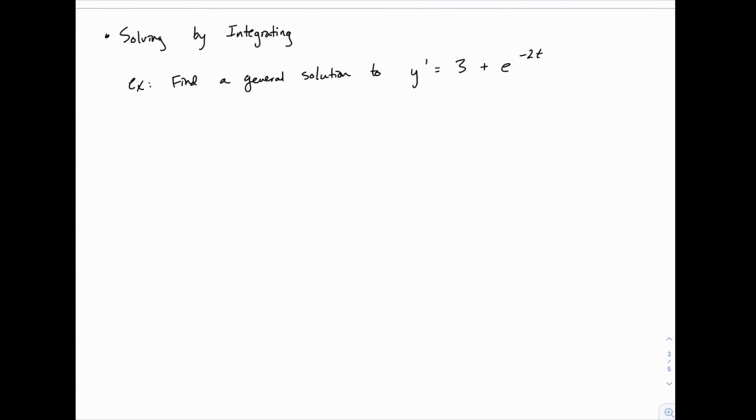Now notice carefully the form of this differential equation. We have y prime equals a function that only involves our independent variable t and doesn't have any y's on the right side. If you had y prime equals something that involved y or both t and y, this approach would not work. So this solving by integration only works when we have y prime equals some expression just involving our independent variable.